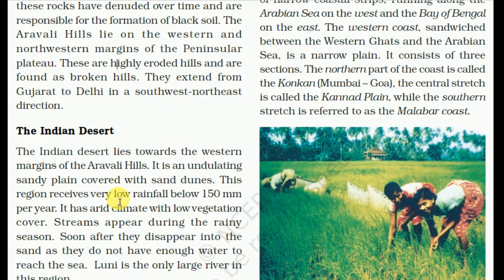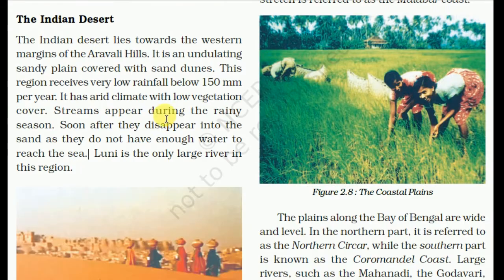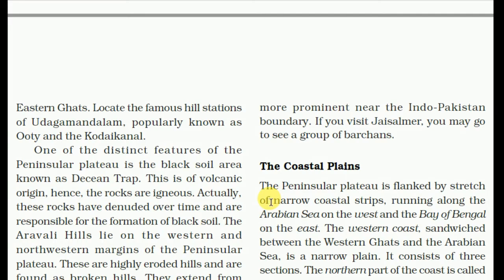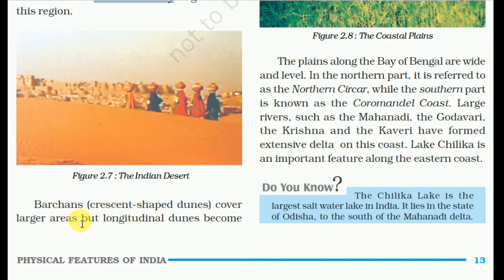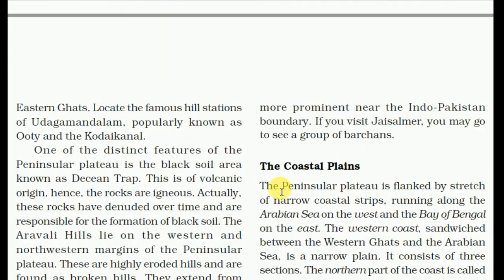The Indian Desert lies towards the western margins of the Aravalli hills. It is an undulating sandy plain with sand dunes. This region receives very low rainfall — below 150 mm per year. It has an arid climate with low vegetation cover. Streams occur during the rainy season but soon disappear into the sand as they do not have enough water to reach the sea. Luni is the only large river in this region. Crescent-shaped dunes called barchans cover large areas, but longitudinal dunes become more prominent near the Indo-Pakistan boundary.